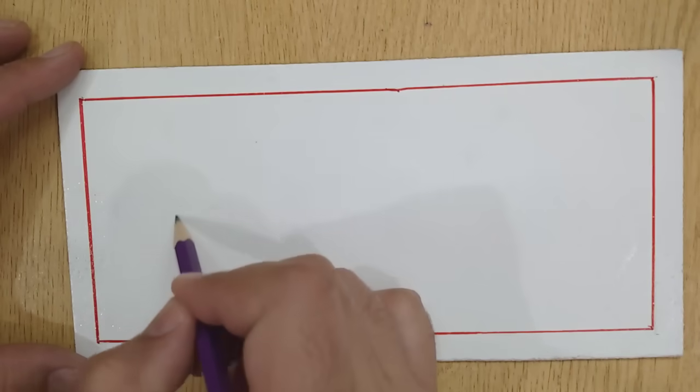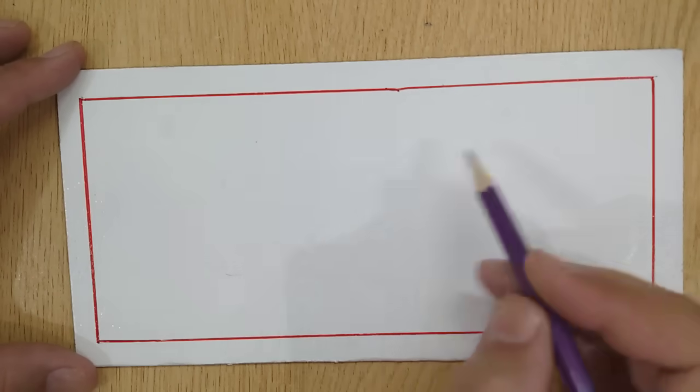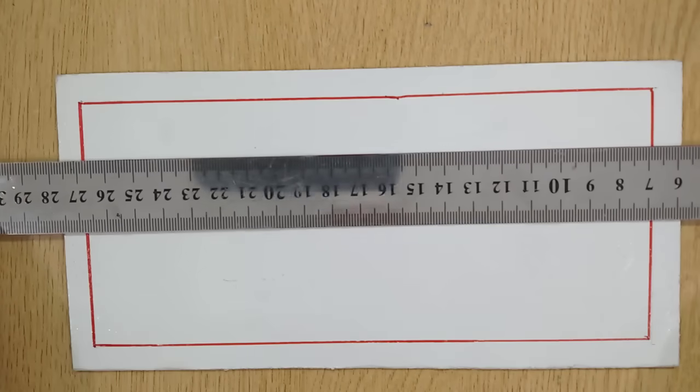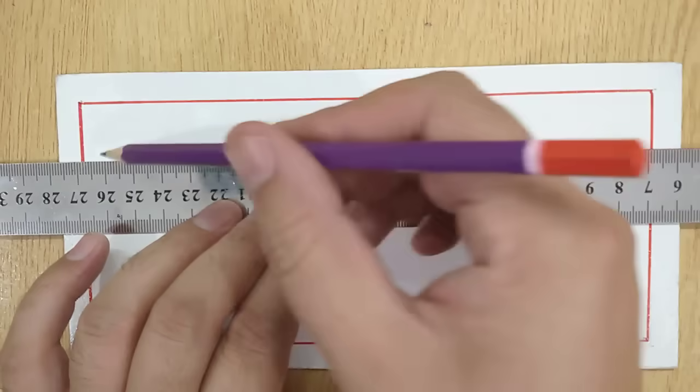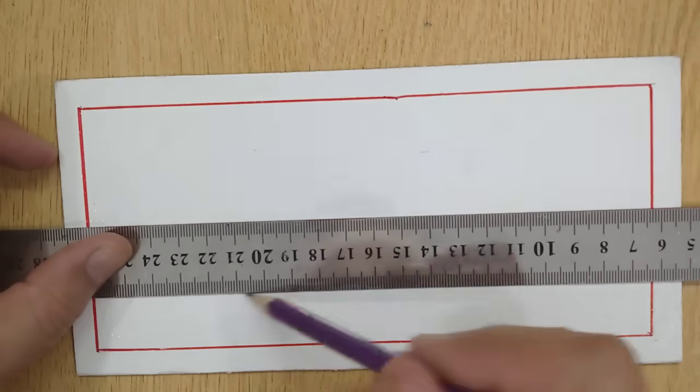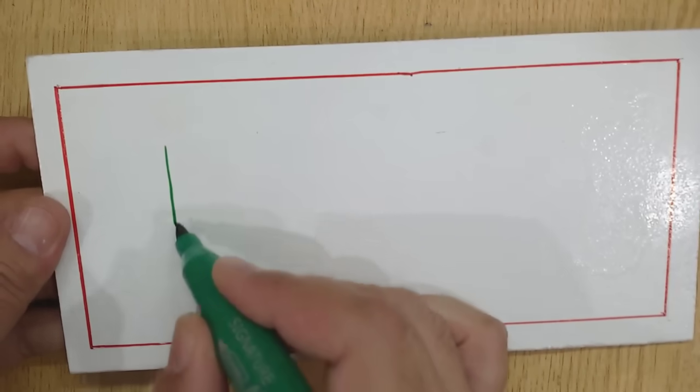First write your desired text using pencil, and then shade with a permanent marker.